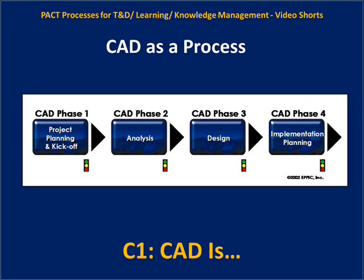A curriculum architecture project does not produce any new content. It simply analyzes the performance requirements of knowledge and skills, assesses existing content as to its availability to be used as is, or after modification, or not appropriate to this effort. It designs a learning and development path — a sequence of instruction, a learning continuum — and identifies both what already exists and where the gaps are. In Phase 4, those gaps are prioritized and priced for development and/or acquisition as appropriate.